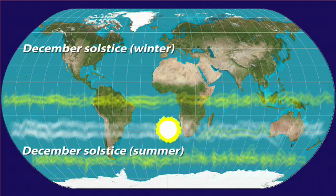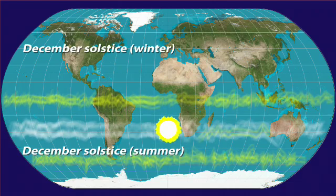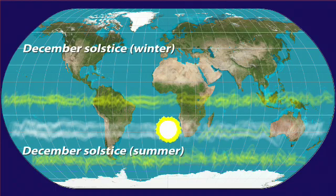As the sun migrates south, the Hadley and Ferrell cells migrate with it, along with the bands of stormy and dry conditions that correspond to them. This is when the monsoonal rains come to southern Africa, and why these are a summer phenomenon.